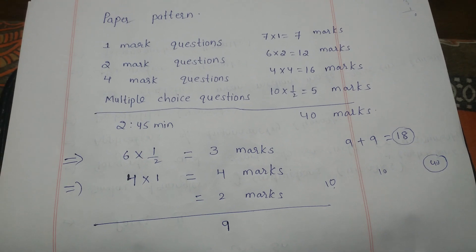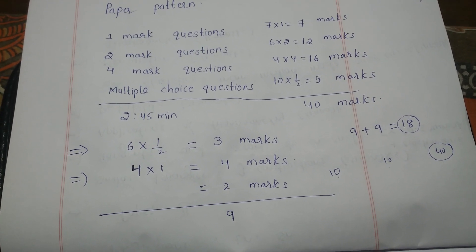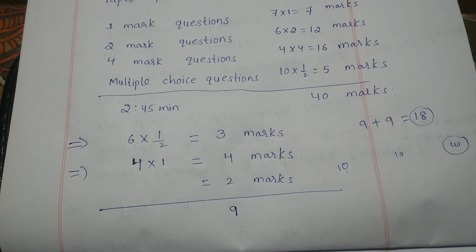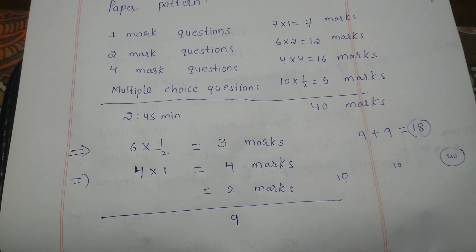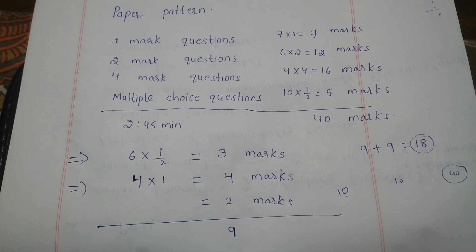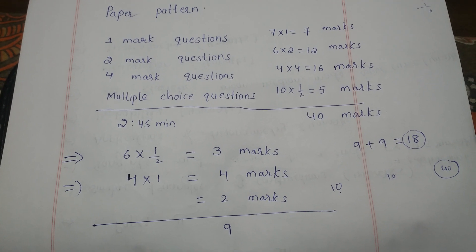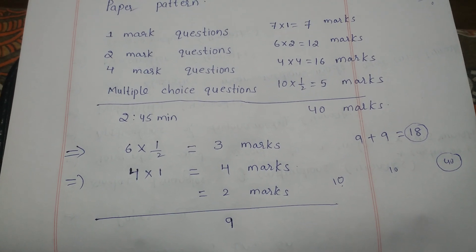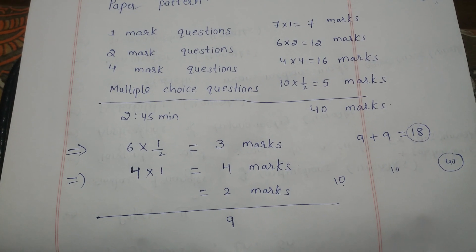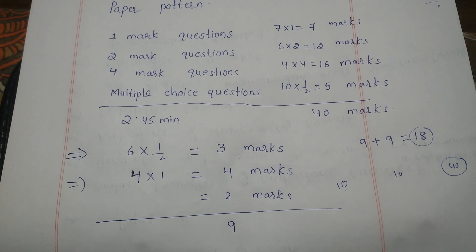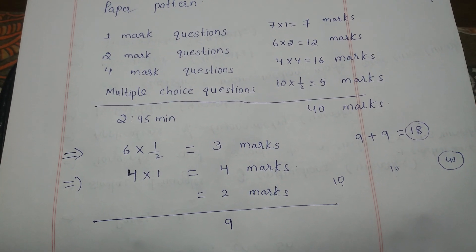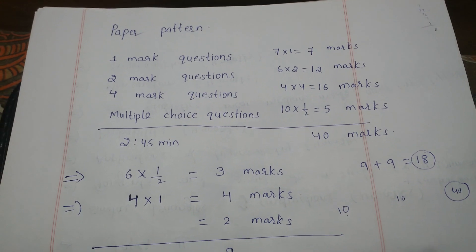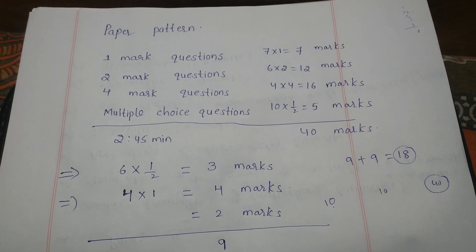But attempt each and every question without leaving a single question. In four-mark questions where A and B options are there, attempt both. After finishing your paper, write the optional questions also — attempt those too, because sometimes even if it goes wrong you may get marks. First write all one-mark questions, then two-mark questions, then four-mark questions and MCQs. If you have time, attempt extra questions also — these are bonus marks. Getting pass marks is very easy, focus on scoring.